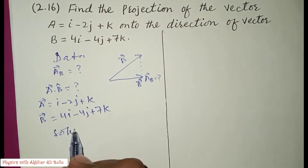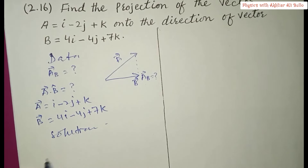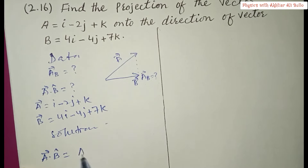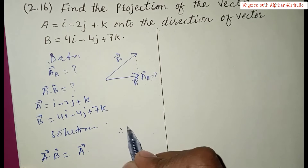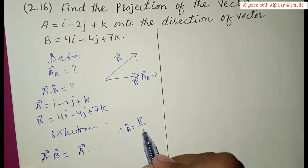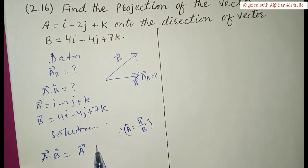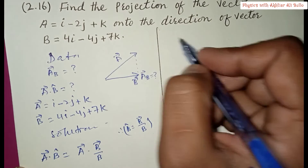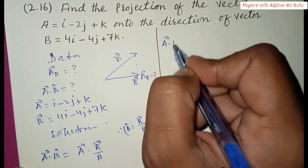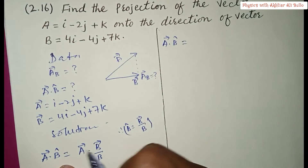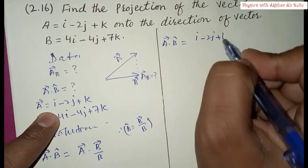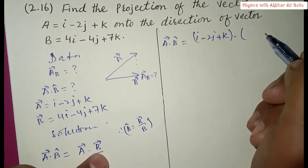In the solution, the projection of vector a onto the direction of vector b equals a-vector dot b-unit-vector, which we can also write as a-vector dot b-vector divided by its magnitude. Substituting the values, the projection equals a dot b over |b|, where a is i minus 2j plus k and b is 4i minus 4j plus 7k.